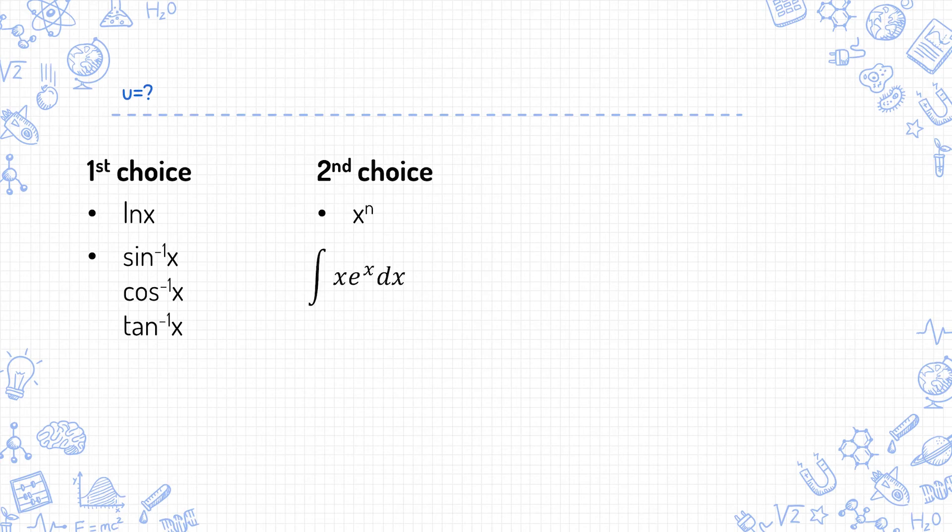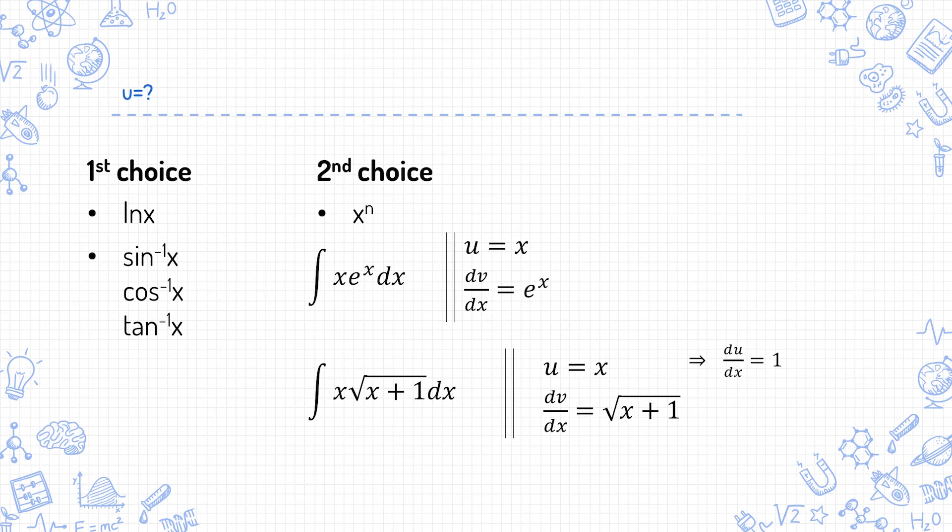So for something like x e to the power of x, you will also choose u equals x and dv/dx equals e to the power of x, because e to the x is very easy to integrate. It's just multiplied by a constant every time while you wait for the x part to be reduced to a constant. Then for something like this, you can choose u equals x and dv/dx equals square root of (x plus 1). Which is du/dx equals 1. And the dv/dx here is in the form f'x times fx to the power of n. So it becomes fx to the power of n plus 1 over n plus 1.